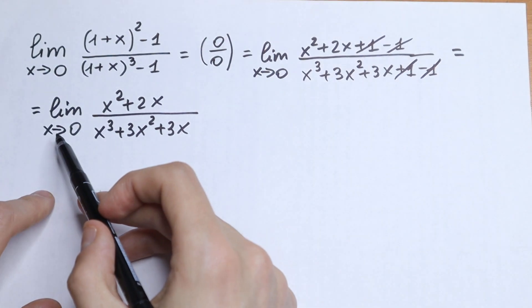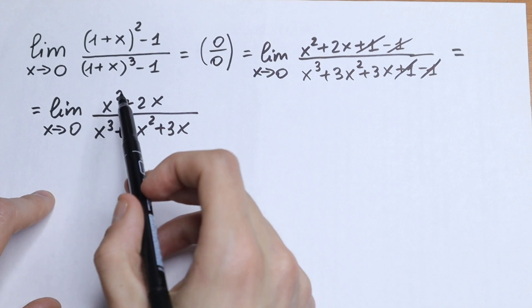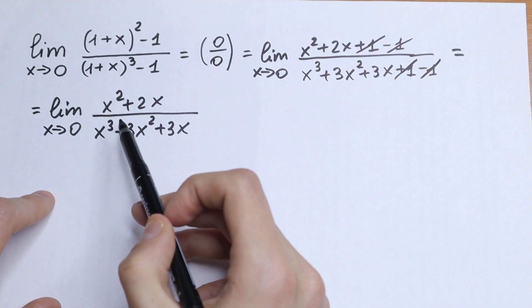So what are we going to do next? Let's plug in 0 at first. So we will have the same 0 over 0.